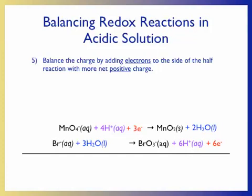At this point, we can do a very important check. As we balance our half-reactions, we should have one oxidation and one reduction half-reaction. Our second half-reaction is an oxidation half-reaction — note that electrons appear on the right-hand side as products. Electrons are products of oxidation half-reactions. For reduction half-reactions, electrons are reactants, consumed during reduction. Therefore, the first half-reaction is a reduction half-reaction.